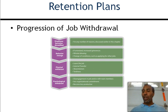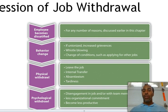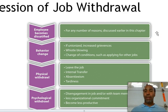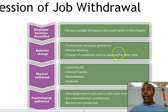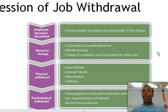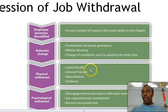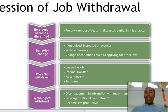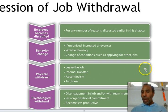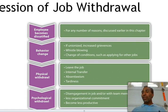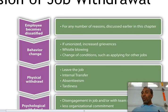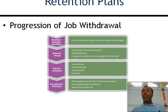This is the progression of job withdrawal. An employee becomes dissatisfied for any number of reasons. Behavior change — if unionized, increases grievances, whistleblowing, or applying for other jobs. Physical withdrawal — leaving the job, internal transfer, absenteeism, and tardiness. And psychological withdrawal — disengagement from the job or team members, less organizational commitment, and becoming less productive. That's the path most people go through with job withdrawal.